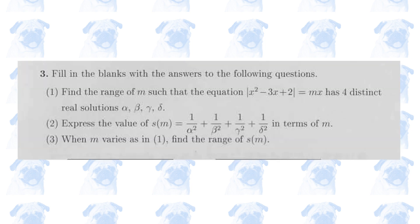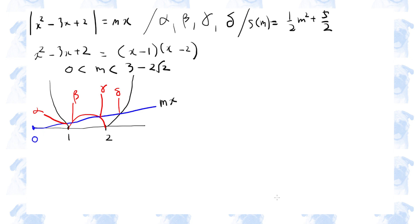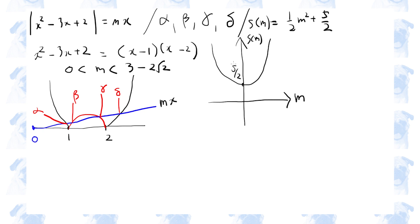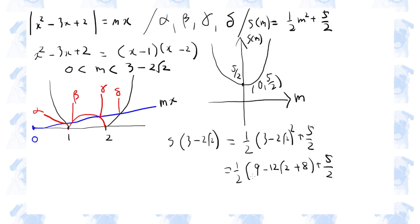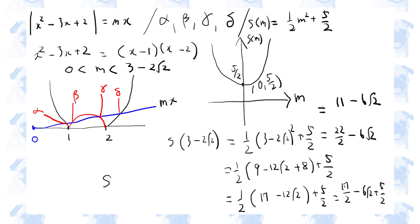Section 3, number 3. In this final question, we need to find the range of s of m when m is between 0 and 3 minus 2 root 2. So let's visualize s of m. s of m is basically a quadratic function whose vertex is at 0 comma 5 over 2. So m equals 0 corresponds to the vertex, and we need to substitute m equals 3 minus 2 root 2 to find the upper bound of the range. So s of m is between the vertex 5 over 2 and 11 minus 6 root 2. And this is the end of this exam paper. See you next time.